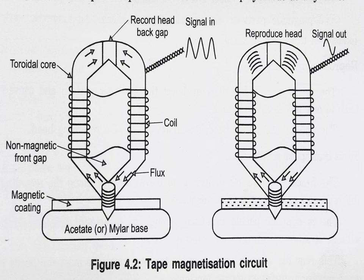This EMF is taken to the reproducible head. The reproducible head converts this magnetic pattern into electrical signals. Thus, these two heads contribute to the conversion of electrical signal to magnetic pattern, where the signals are stored as a pattern. When it goes to the receiver side, it is again converted into electrical signal.